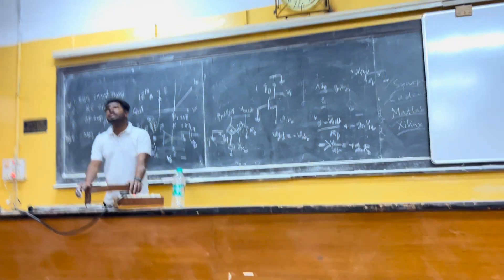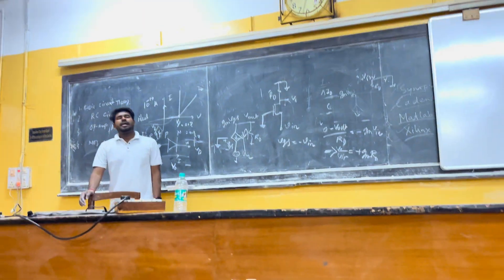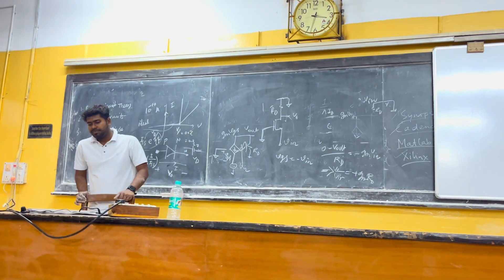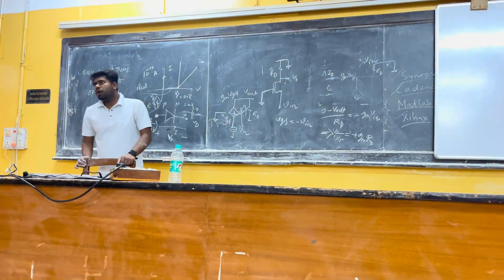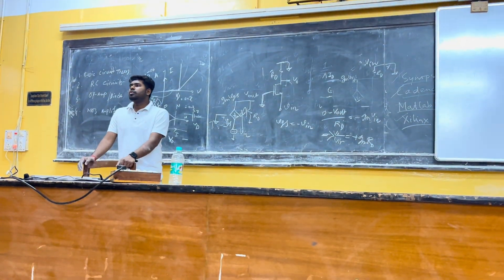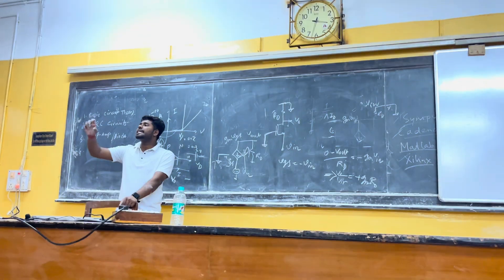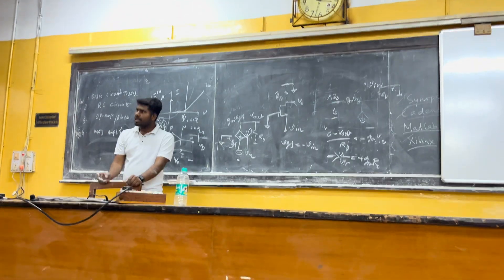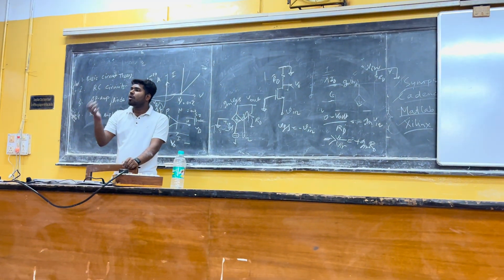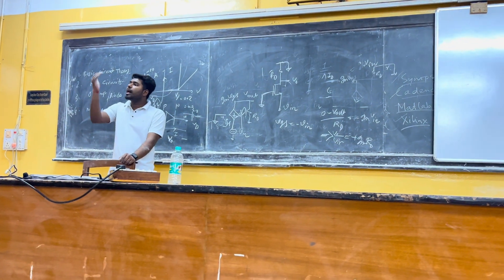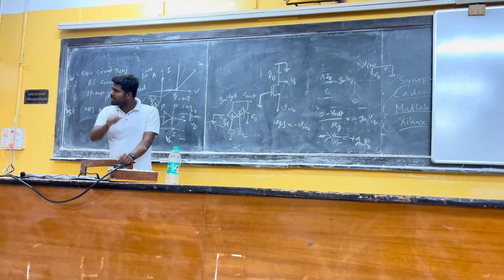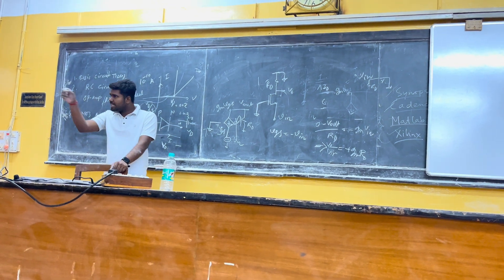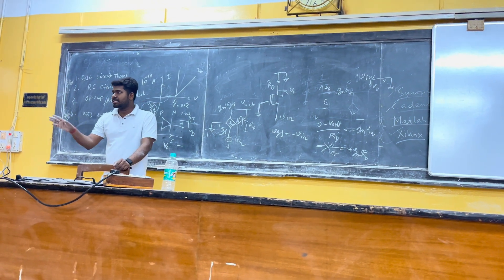To find any resistance or effective resistance, what do we need to do? We need to apply a test voltage, send all independent sources to ground, and measure what current is coming out of this test voltage. Then take the ratio — that gives the resistance at the output.